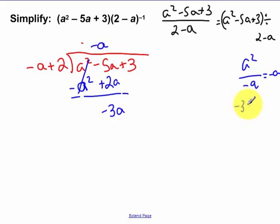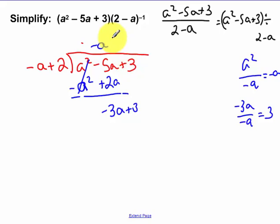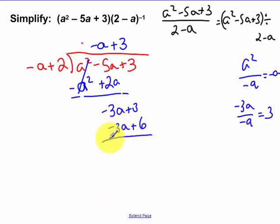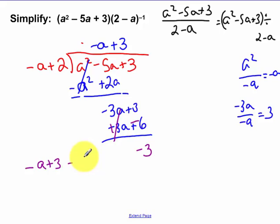Now go again: negative 3a divided by negative a is positive 3. Don't forget to bring down the 3. So positive 3 goes up front. 3 times negative a is negative 3a, 3 times 2 is 6. Change all the signs and add — I distribute that negative, change all those signs and add. Those go to 0, and I have a negative 3. So negative 3 is our remainder. We have negative a plus 3 minus 3 over negative a plus 2.